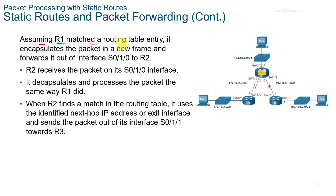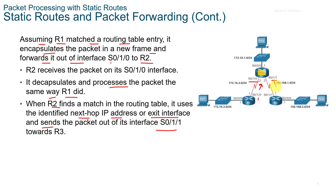Assuming that R1 matched a routing table entry, it encapsulates the packet in a new frame and forwards it out the S0/1/0 interface to Router2. Router2 decapsulates and processes the packet the same way R1 did. When R2 finds a match in the routing table, it uses the identified next hop address or exit interface and sends the packet out its S0/1/1 interface down to R3.